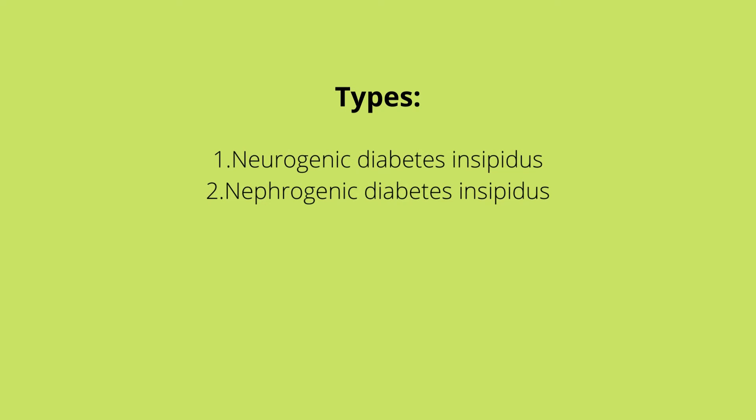With diabetes insipidus we could either have neurogenic diabetes insipidus or nephrogenic diabetes insipidus. With neurogenic diabetes insipidus, it could be due to an injury or a tumor in the hypothalamus or pituitary gland, such that insufficient ADH is being released from the posterior pituitary gland.